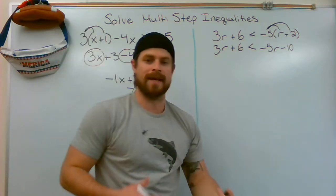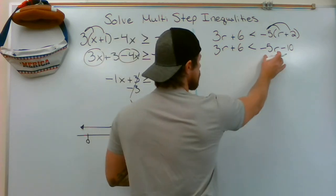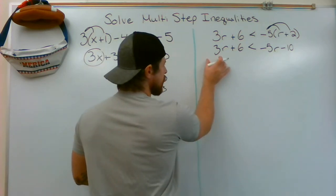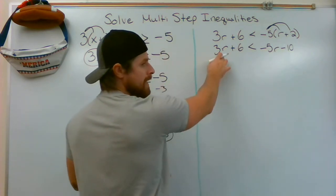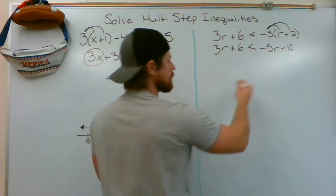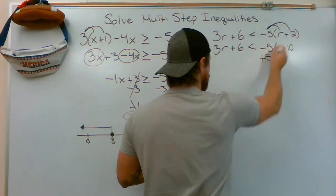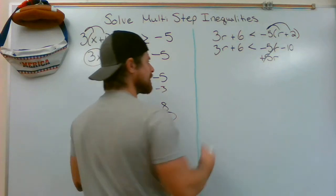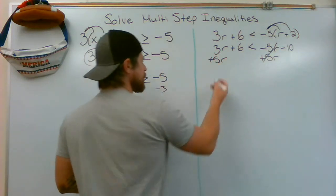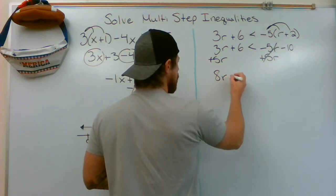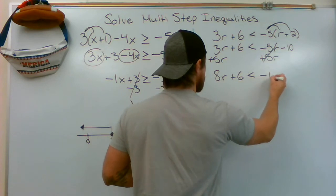That means it's time for me to use my inverse operations. I'm going to bring all of my variables to one side. So I don't like having an r on the right and an r on the left. Let's just move them all over to the left. Opposite of negative 5r is positive 5r. That's what will cancel it. Add 5r over here. 5 plus 3 gives me a grand total of 8r plus 6, less than negative 10.